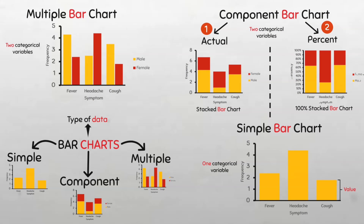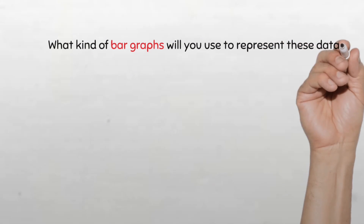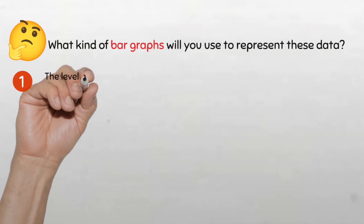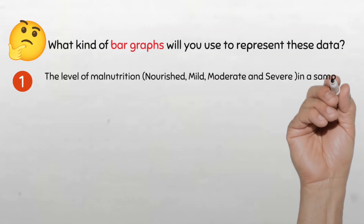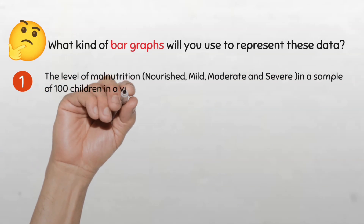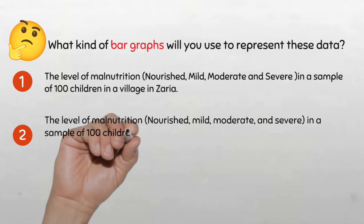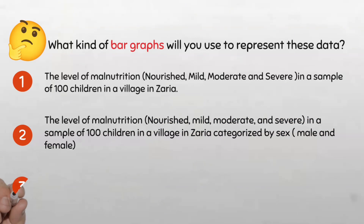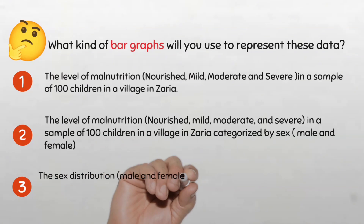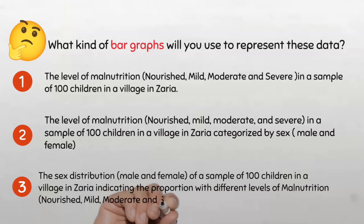Now you know the different types of bar charts and the kinds of data to use for each type. Now it's your turn — show me what you can do. What kind of bar graphs will you use to represent this data? 1. The level of malnutrition, categorized as nourished, mild, moderate, and severe in a sample of a hundred children in a village in Zarya. 2. The level of malnutrition in a sample of 100 children in a village in Zarya, but this time categorized by sex, male and female. And 3. The sex distribution of a sample of a hundred children in a village in Zarya indicating their proportion with the different levels of malnutrition.